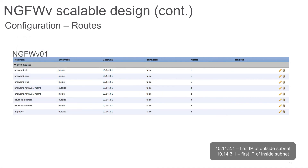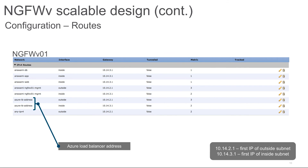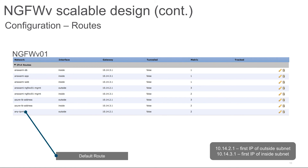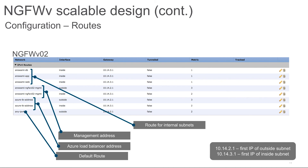We need to add routes for the management interface and for the load balancer, as well as routes for the web application and database server, and a default route. The IP address ending in .2.1 is the first IP address of the external subnet, which is the Azure gateway — it knows how to route traffic to the internet and to other subnets within the same VNet. The address ending in .3.1 is the first IP of the internal subnet, also an Azure gateway. The same routes are applied for firewall 2, with the only difference being the management IP address of firewall 2.